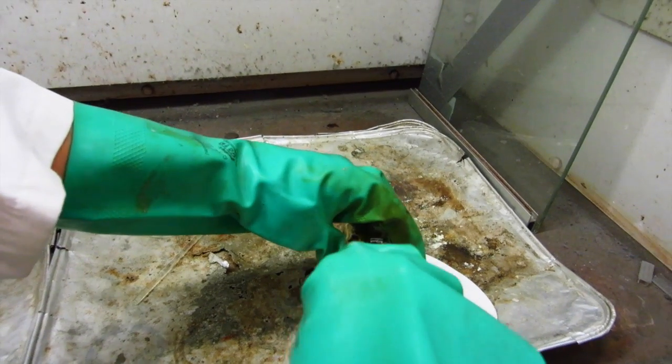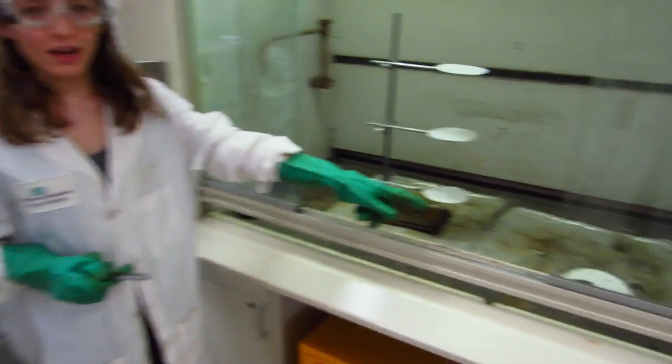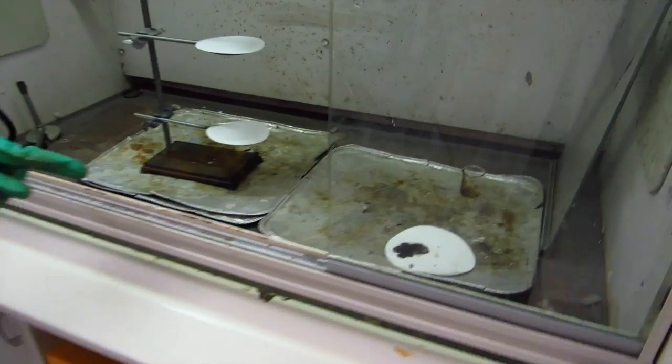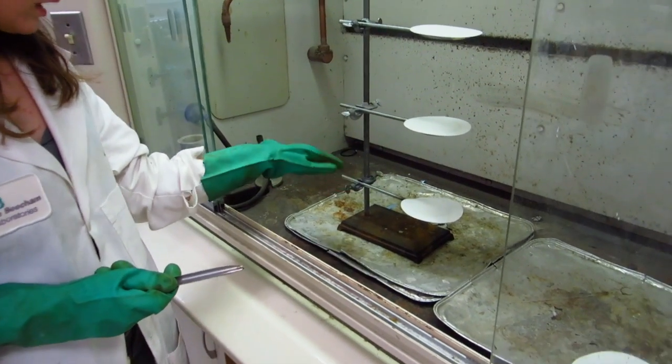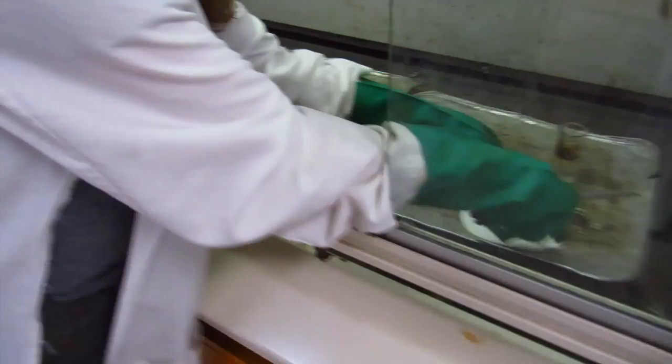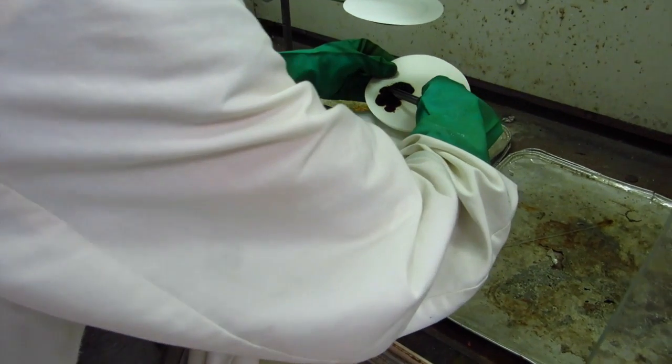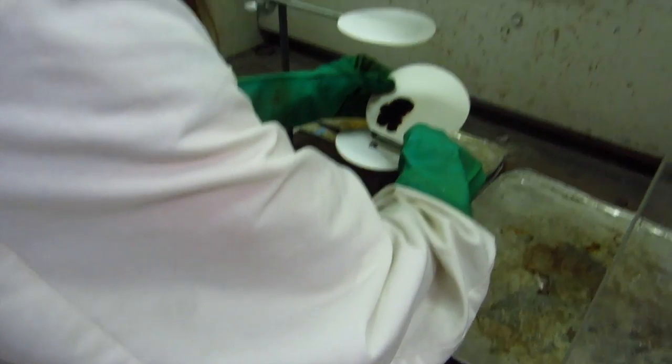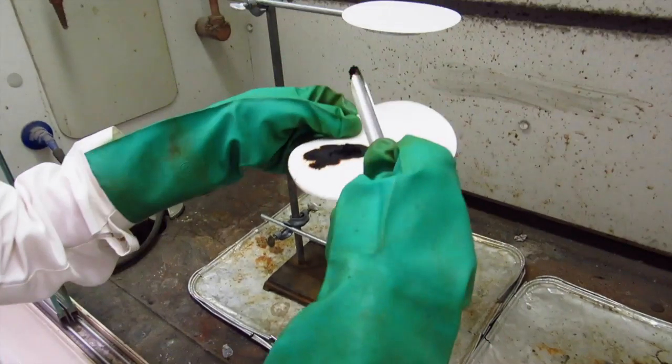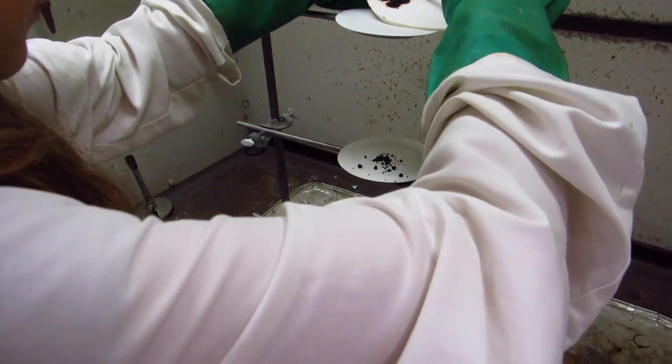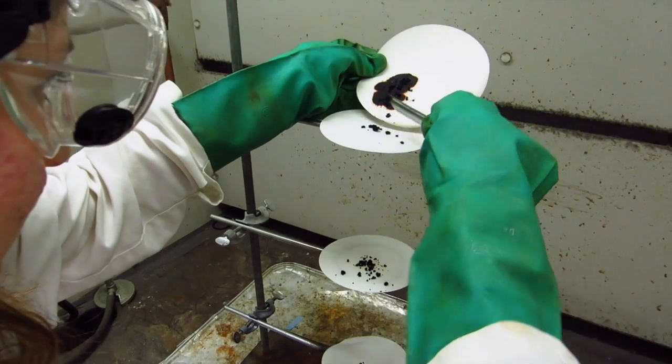Okay. So now we're going to be taking the nitrogen triiodide that has been drying on the filter paper, and we're going to be evenly distributing it onto three filter papers on the stand. Okay. So now we're going to put it on the top.